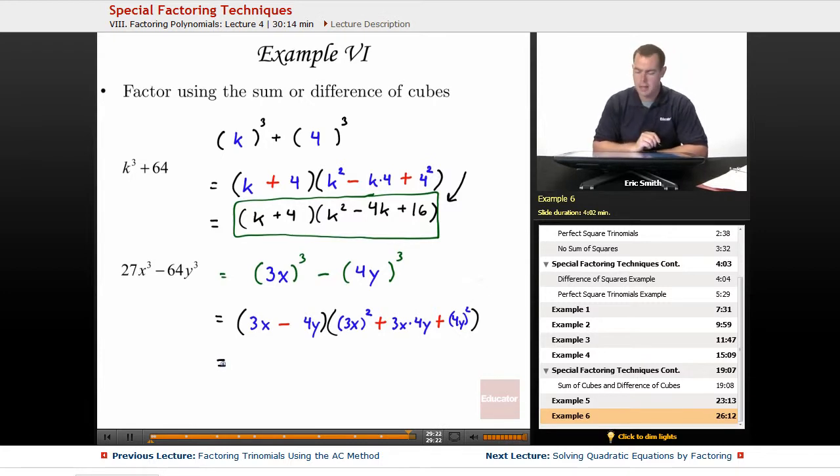Now one last step. Let's go ahead and clean it up. 3x minus 4y. Now I have the entire thing, 3x being squared, so that will be 9x squared,